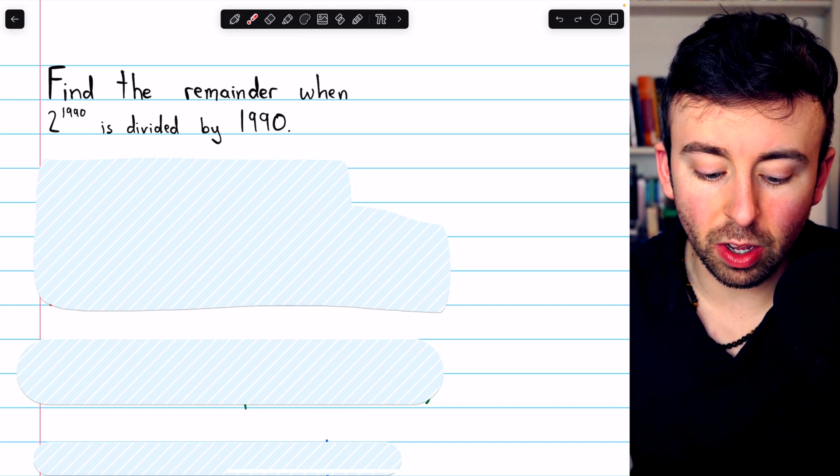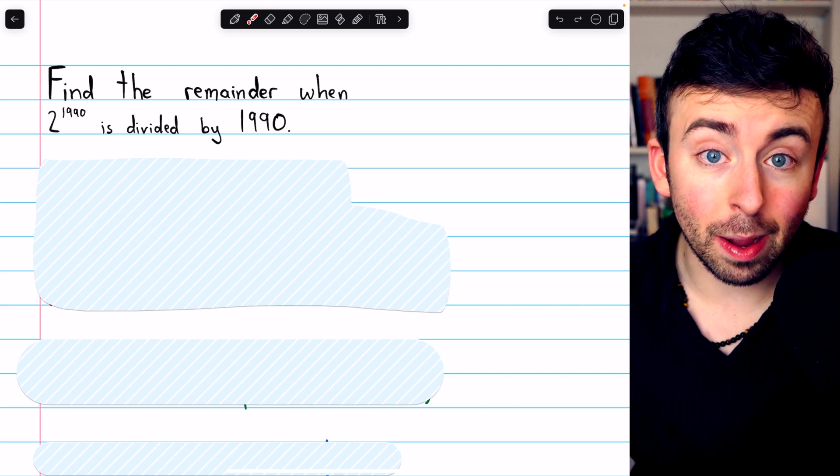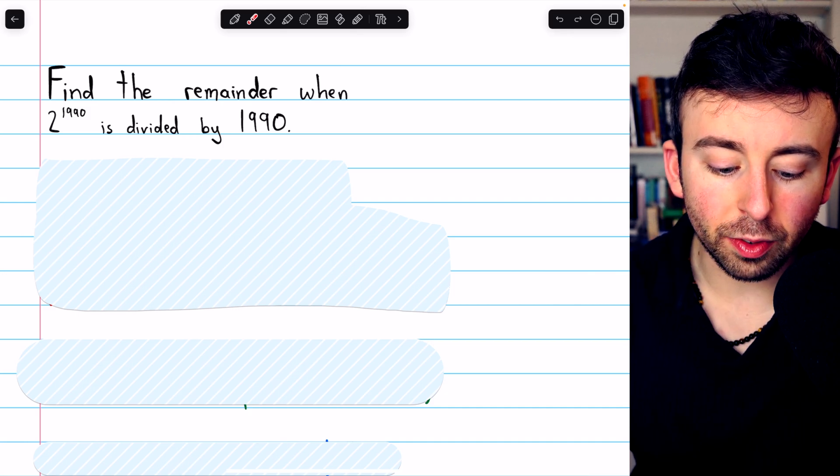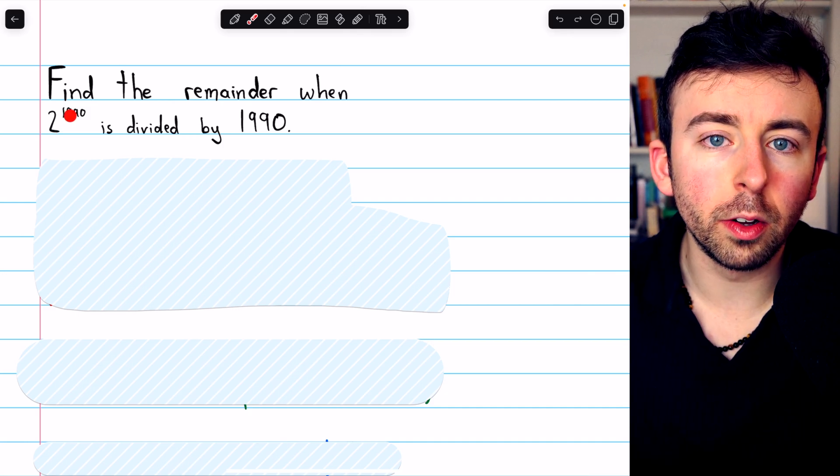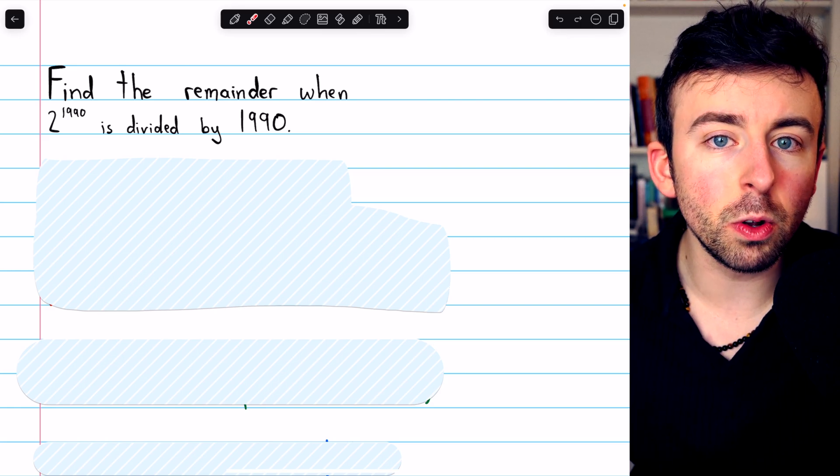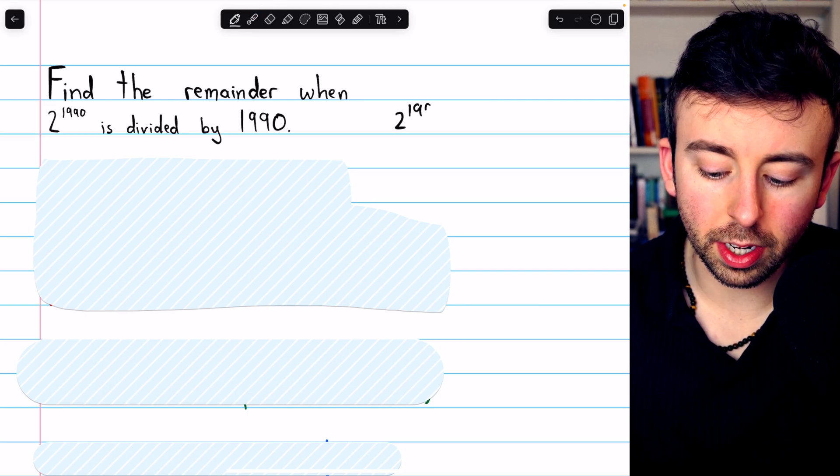You might immediately notice that 199 is prime, or that perhaps it's prime. Either way, that should be our first point of investigation. We have 2 to the power of a multiple of a prime number, and we're going to be able to use Fermat's little theorem.